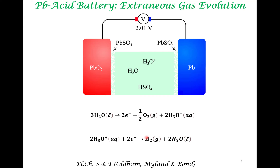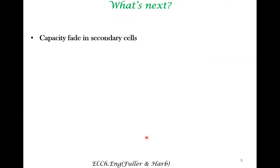Self-discharge is an important aspect of a battery and you want to suppress it. A lot of research is going into understanding the different pathways in different battery chemistries. In the next lecture, we will look at another important topic, which is the capacity fade in a secondary battery. Thank you.